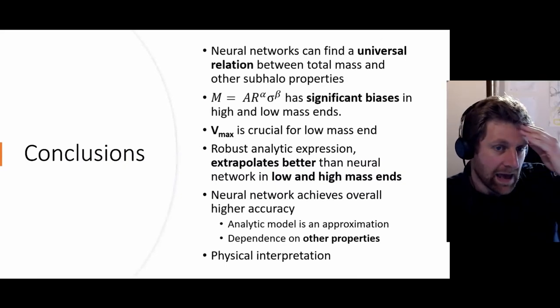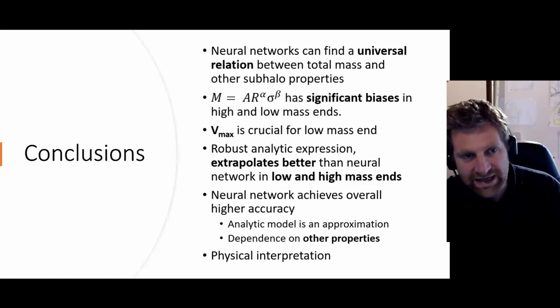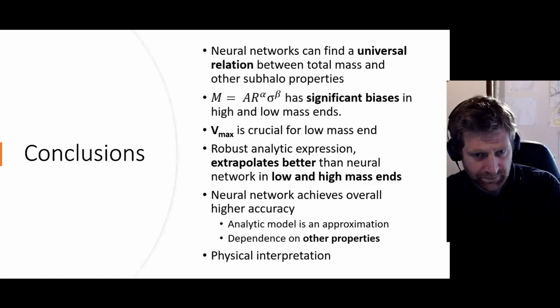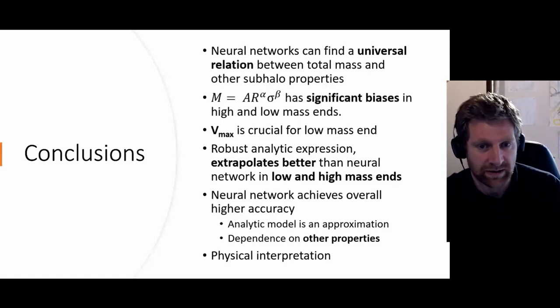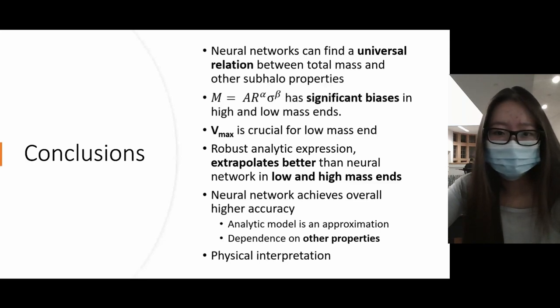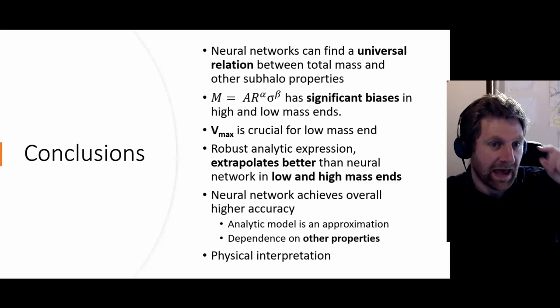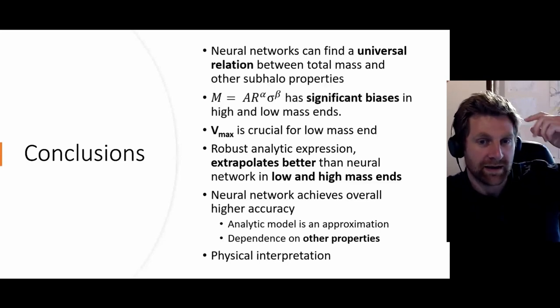With the simple power law model M = A·R^α·σ^β, you only fitted it to the whole space. But with the other analytic expression, you broke it up into bins. If you had broken that simple expression into three bins, does it still not do well? We tried that, and found that for the lower masses with just radius and sigma, the expression could not perform with high accuracy - that's why we introduced Vmax.